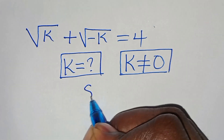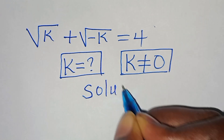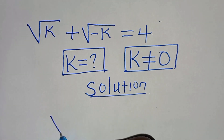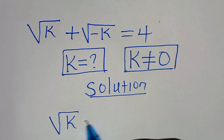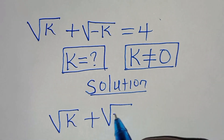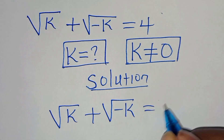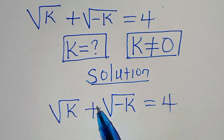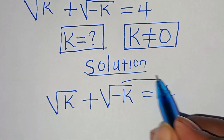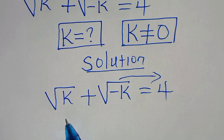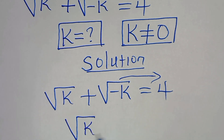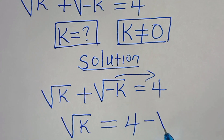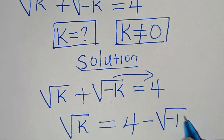Let's present the solution from here. We have the square root of k plus the square root of minus k, equal to 4. The first step is to take the square root of minus k to the right hand side, so that we have the square root of k equals 4 minus the square root of minus k.